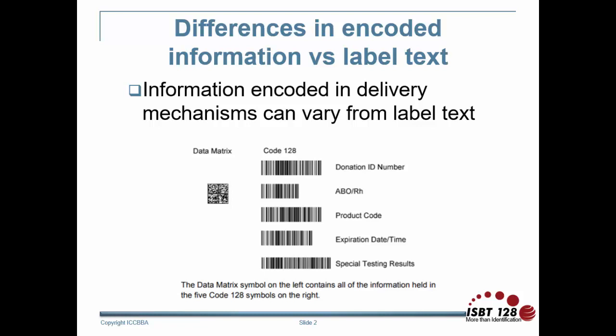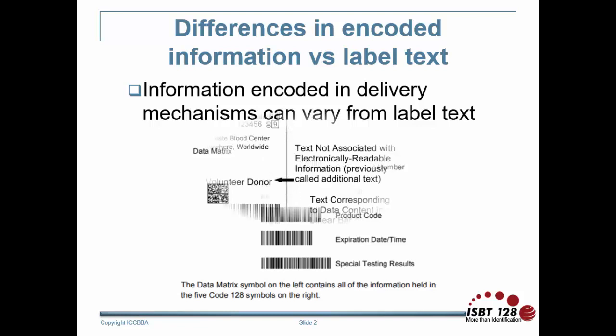For example, there may be specific national and/or regulatory requirements on how label text should appear. In some instances, there may be spatial constraints due to label size for smaller containers, or label text may be printed in different languages.